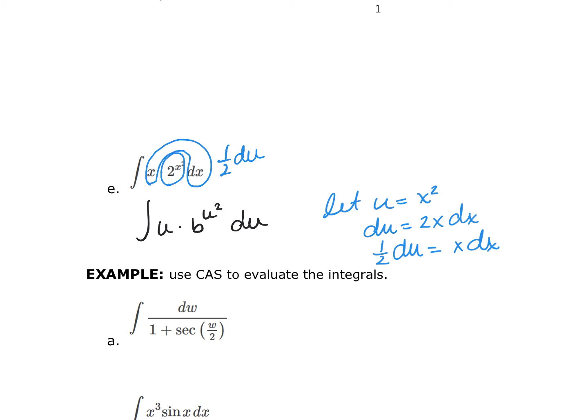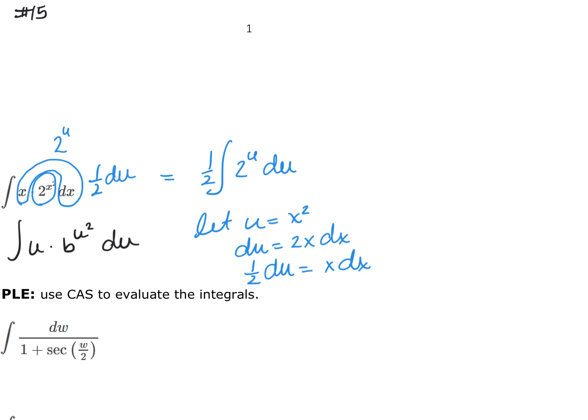And this gets replaced with 2 raised to the u. So then what I'm really integrating is 1 half 2 raised to the u du. And this is not on the table of integration, but we absolutely know how to integrate this. This ends up becoming 1 half the natural log of 2, 2 to the u plus c. So in other words, 2 raised to the x squared over the natural log of 2 plus c.